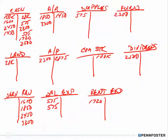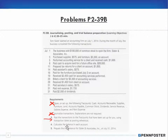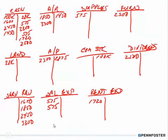Okay, so that was number three — posting all the transactions to the T-accounts. Now I have to calculate the balances in each account, which is basically just doing the math. I add up all my debits in the cash account, add up all my credits, then subtract one from the other. Whichever side is greater is the side the balance goes on.